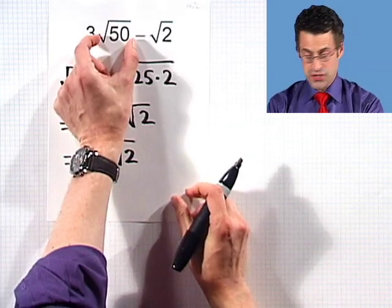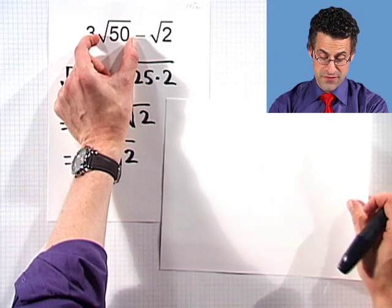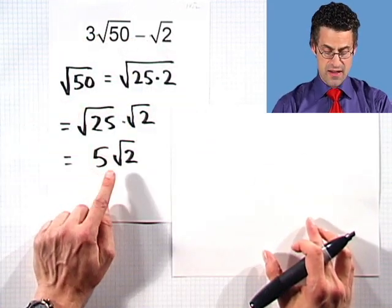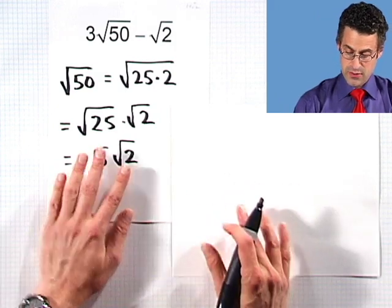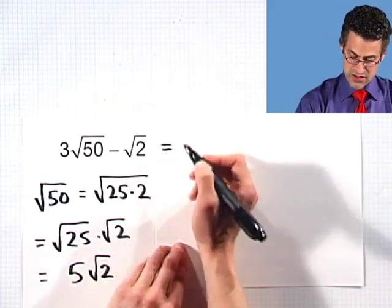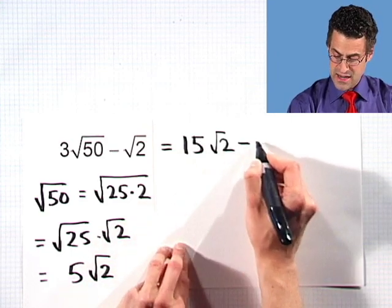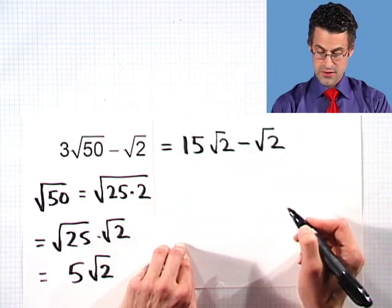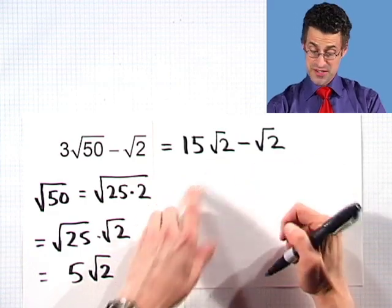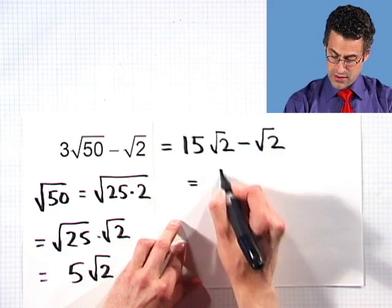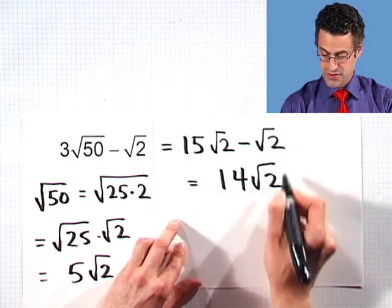So if I insert that in here for the square root of 50, I'll see three times five square root of two. And so what I see now is that this thing is equivalent to 15 square root of two minus square root of two. Well, that's cool because now they're like terms and I can now combine them. 15 square roots of two minus one square root of two is 14 square root of two.